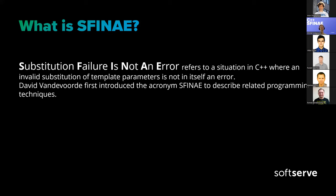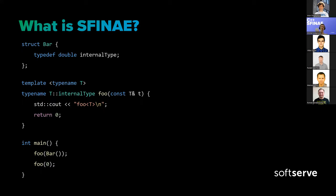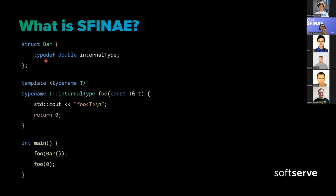Let me show you in practice how it looks, because it may be more clear. So here we have a small structure bar, which has only a typedef called internal_type. Then we have a template with type name T that basically returns T::internal_type. It's a function called foo that takes a const reference of type T. The only thing it does is print a static string and return 0.